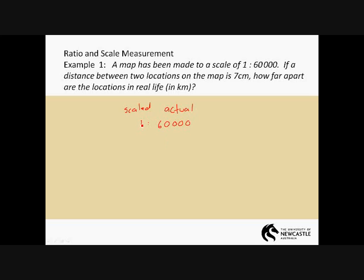So for example, one centimeter on this map will represent 60,000 centimeters in real life. One millimeter will be 60,000 millimeters. So whatever is on the scale drawing will multiply by 60,000 to see what it's worth in real life.